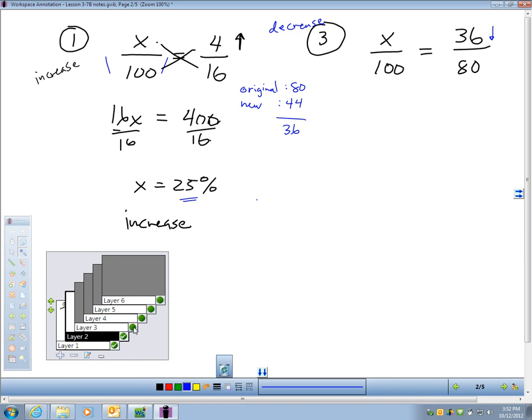We're going to use cross products. I'll take 80 times X, which is 80X, 100 times 36, which is 3,600, divide each side by 80. And I'm finding out that in this case, starting at 80 and dropping to 44 is a 45% decrease. Like if that was money, if I started with 80 bucks and lost $36 and I had 44 left, I've lost almost half my money, almost 50% of that amount. So 45% decrease.